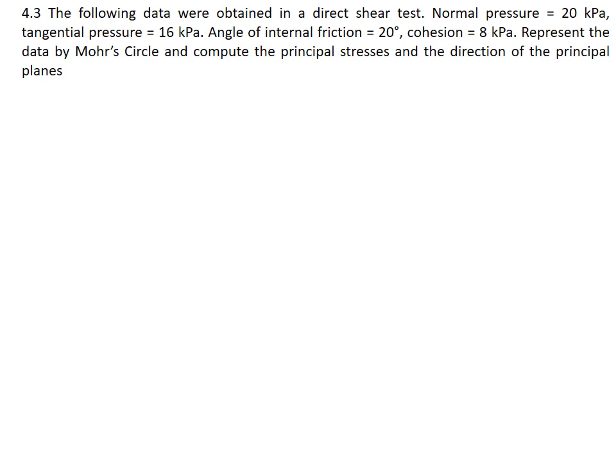Here we have a problem on direct shear test. The normal pressure is given 20, tangential pressure is nothing but the shear stress is given 16 kPa, friction angle 20 degrees, cohesion 8 kPa. We will draw a Mohr circle and find out principal stress and the direction.